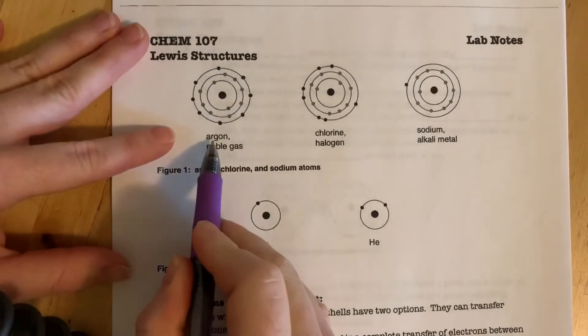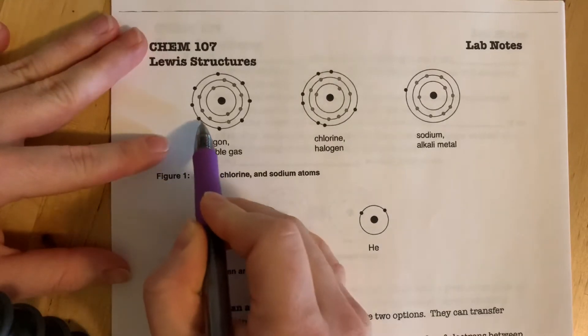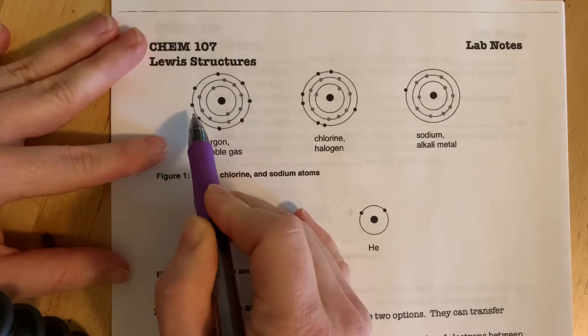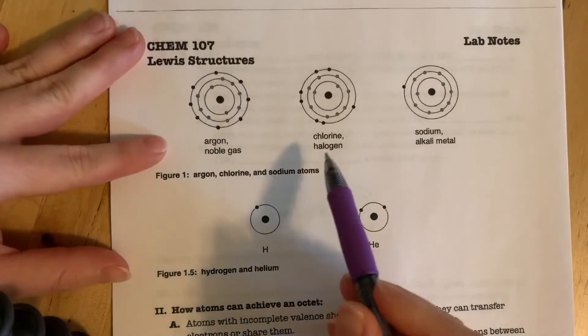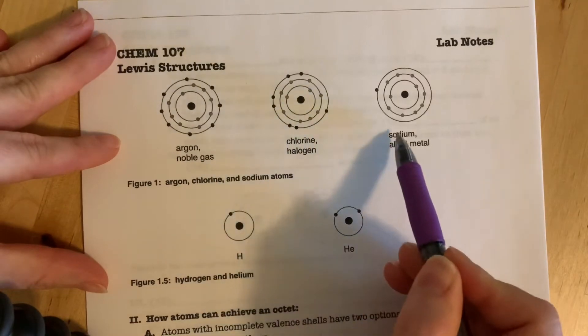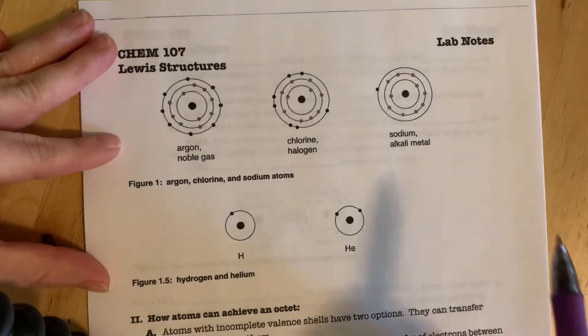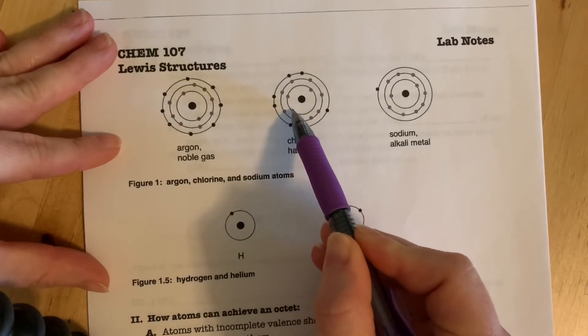For example, argon here, this is one in that eighth column there. You can see it has its eight electrons. One thing to notice about these, here's chlorine with seven valence electrons and sodium with only one valence electron. The thing to notice is that all of the inner shells are completely full.